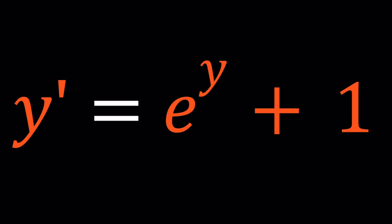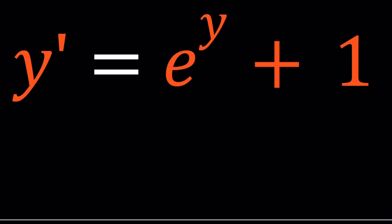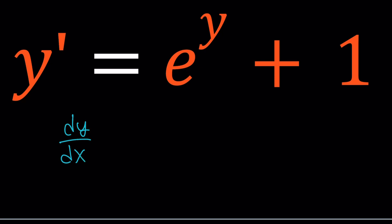We can go ahead and replace y prime with dy over dx, which is kind of like a nicer form because it tells you that you're going to differentiate y with respect to x. That gives you more information. Set it equal to e to the y plus 1. Now, this is a separable differential equation, which means you can put the y terms on one side and the x terms on one side, and then you can integrate. One of the easiest kinds of differential equations.